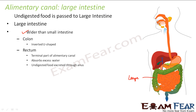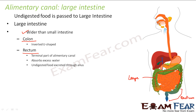The large intestine is divided into two parts: the colon, which is the inverted U-shaped part, and the rectum, which is the terminal part of the alimentary canal. The rectum absorbs excess water from the undigested food, and the remaining solid food is excreted out through the anus.